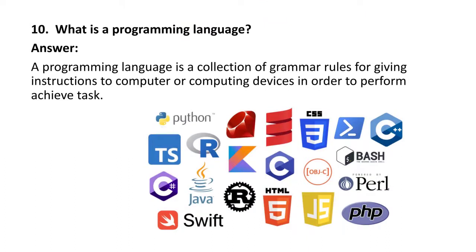Next question: what is a programming language? A programming language is a collection of grammar rules for giving instructions to the computer or computer devices in order to perform achieving tasks. Suppose you want to perform any task — for that purpose, you write a program using a programming language to give instructions to the computer. Different types of programming languages include Python, C, C++, PHP, HTML, and Java.